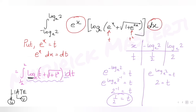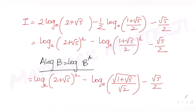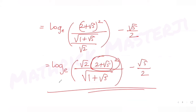The correct answer is option B. The key steps were: substituting e^x = t, using integration by parts, and solving the resulting integral I₁ = √5/2 by substitution. Once we applied the limits and simplified using log rules, the answer matched option B. Stay tuned for more JEE Mains questions daily — please like, subscribe, and share with friends preparing for JEE.